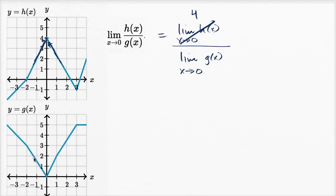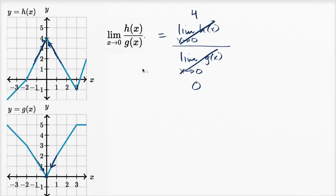Let's think about the limit of g of x as x approaches zero. From the left, as x approaches zero, the value of the function is approaching zero. And as x approaches zero from the right, the value of the function is also approaching zero, which also happens to be g of zero. That makes sense because it's continuous. But now we're in a strange situation — we have to take four and divide it by zero. So this limit does not exist. Even though both individual limits exist, we can't divide four by zero, so the whole limit does not exist. If you were to plot h of x over g of x, you would see even more clearly that the limit does not exist.